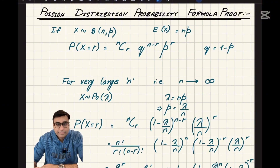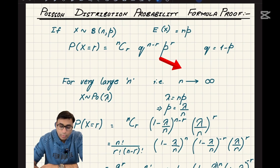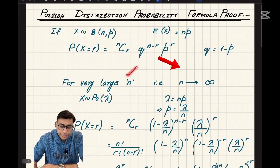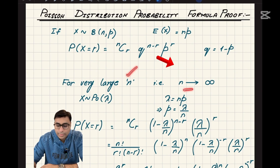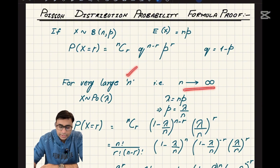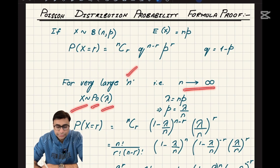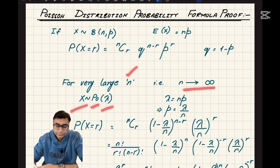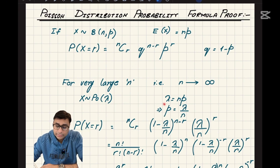The biggest difference between a binomial and a Poisson distribution is the total number of trials. In the Poisson distribution the number of trials is very large and can be approximated as infinity. For a very large number of trials, we say random variable x follows a Poisson distribution where we represent the mean by lambda, so lambda = n times p.